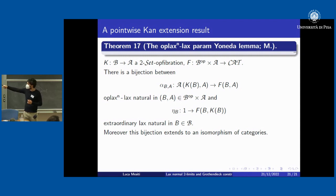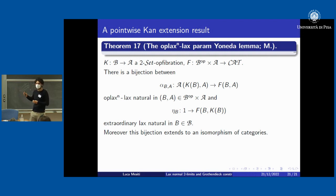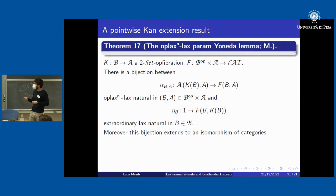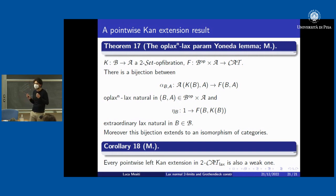I proved the oplax-normal lax parametrized unit lemma, where the alphas are simultaneously oplax normal and lax, corresponding to morphisms from one that are extraordinary lax. It is nice to notice that a fully lax parametrized unit lemma simply could not work: we need some strictness to expand the dot on the identity to a complete transformation. This shows the minimum amount of strictness needed is that of oplax normal natural transformations. It then followed as a corollary that every pointwise left Kan extension in 2-Cat is also a weak one.